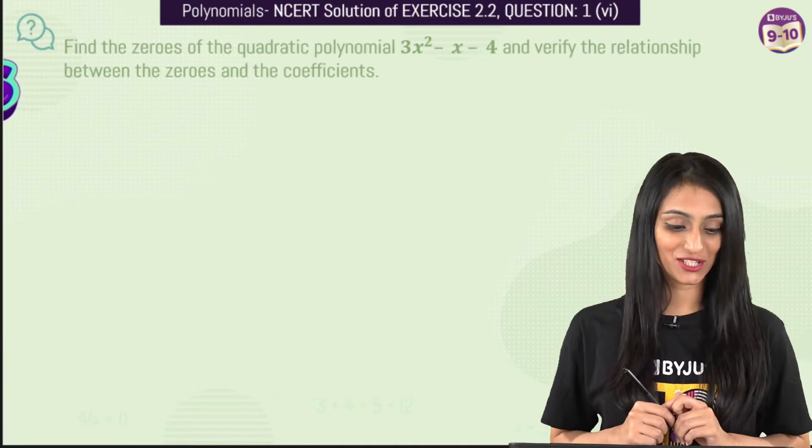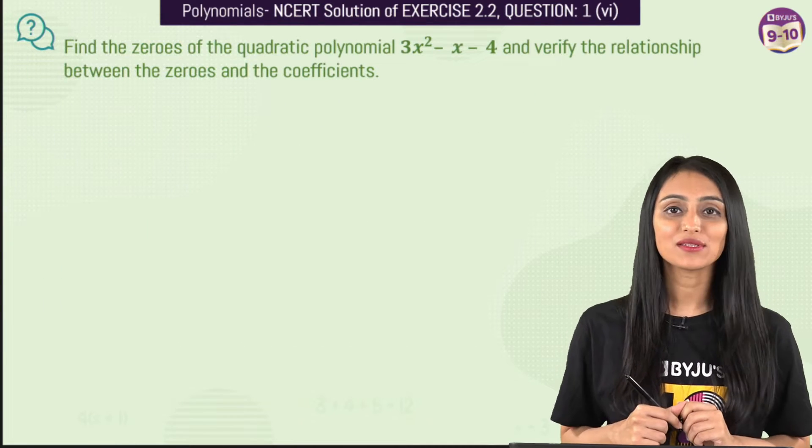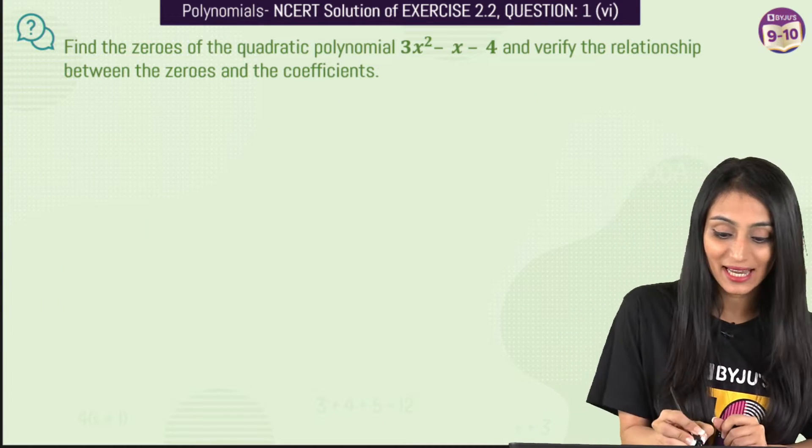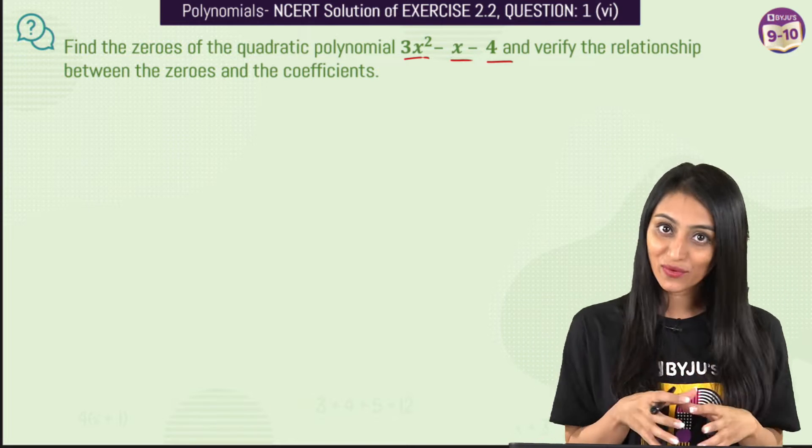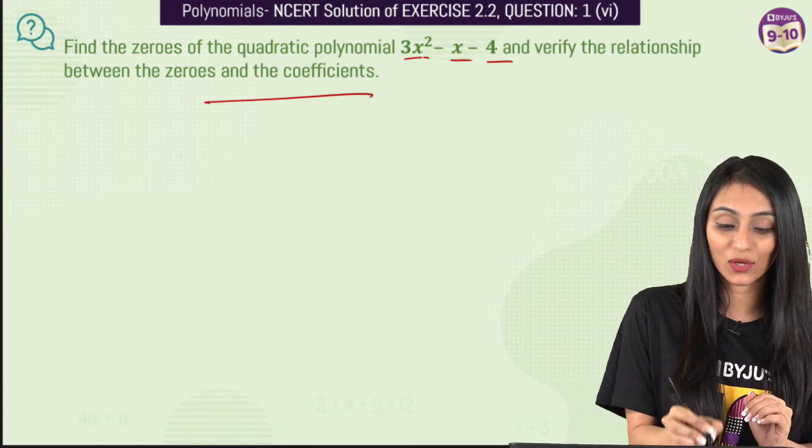So let's take a look at the question. Here we have to find the zeros of the quadratic polynomial 3x² - x - 4 and then verify the relationship between the zeros and the coefficients.